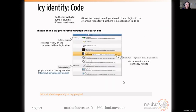To download plugins, go directly into the search bar of the ICY interface and start typing the name of the plugin or some keywords, for instance 'segmentation'. You'll see two types: plugins that are installed locally on your computer, and plugins that are online stored on the ICY website. If you click on an online plugin, it will download from the internet. You can also right-click to go to the online documentation. We encourage developers to add their plugins to the ICY online repository, but there is no obligation.